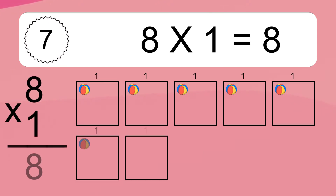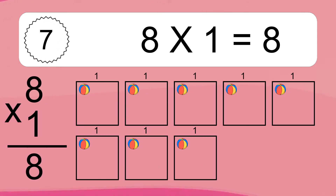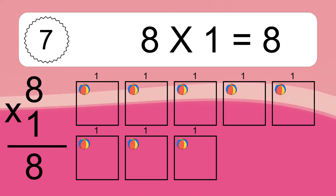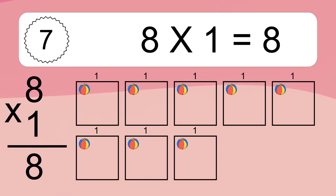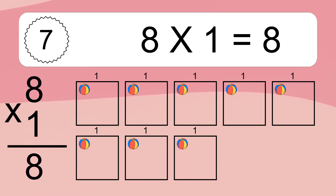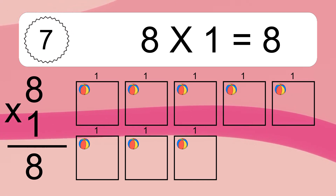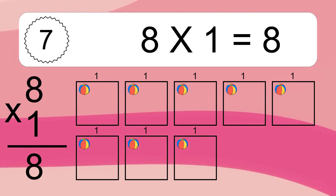8 times 1 equals what? We have 8 boxes, and each box has 1 colorful ball inside. If you count all the balls in all the boxes together, you will have 8 times 1 balls. This equals 8 balls.